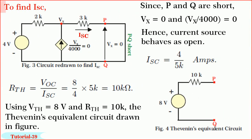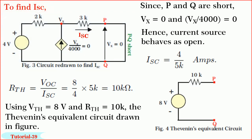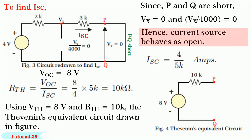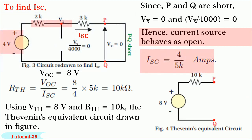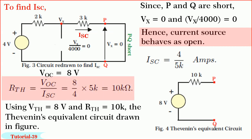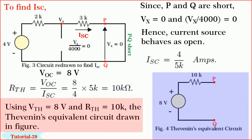To find the short circuit current Isc, the circuit drawn by short circuiting P and Q terminals is shown in figure. Since P and Q are short circuited, Vx equals 0, and the source current Vx/4000 also becomes 0. Note that — hence the current source behaves as open. The circuit incorporating these aspects is shown in figure. Therefore Isc equals 4 divided by 5K amperes. So simple, isn't it? Hence R-Thevenin equals Voc/Isc, which equals 8 divided by (4/5K), giving us 10K. Therefore, Thevenin's equivalent circuit as seen from terminals P and Q can be drawn as shown in figure.